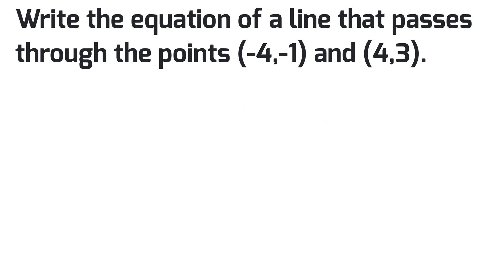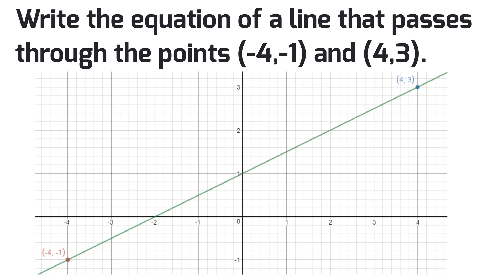The second question tells us to write the equation of a line that passes through the points (-4,-1) and (4,3). So the first thing I want to do is look at this visually on a graph. I've already made it and you see here that the graph starts at (-4,-1) and increases at a constant rate to (4,3).